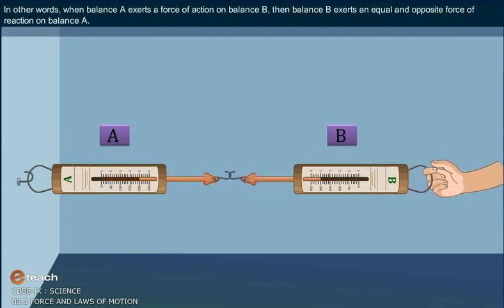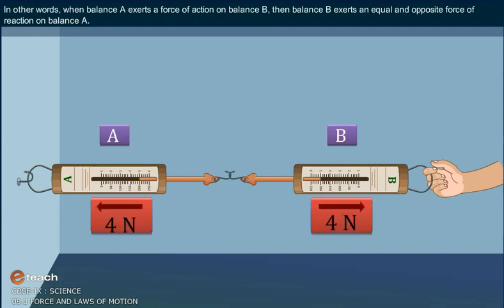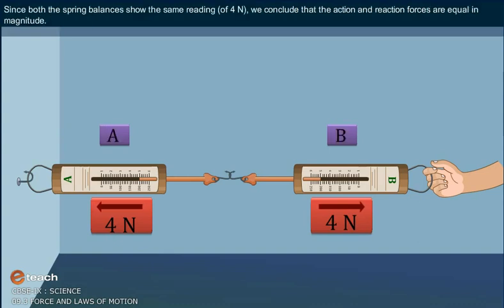In other words, when balance A exerts a force of action on balance B, then balance B exerts an equal and opposite force of reaction on balance A. Since both spring balances show the same reading of 4 Newton, we conclude that the action and reaction forces are equal in magnitude.